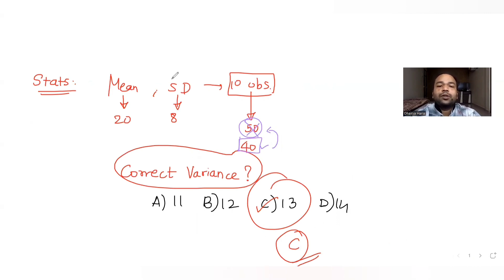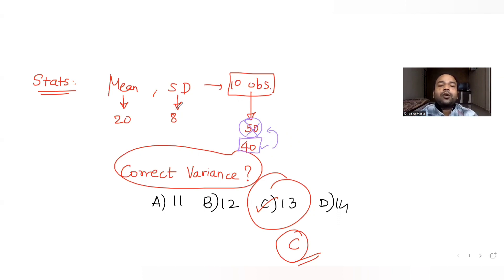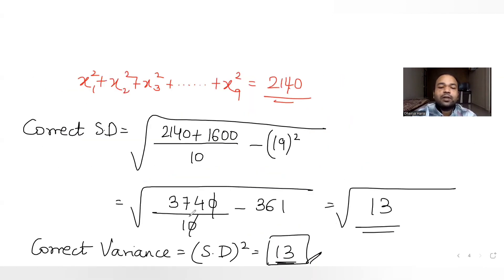I hope you have understood how to solve this type of question where we have been given an incorrect mean and standard deviation with one incorrect observation. We just needed to change 50 to 40, which gave us the correct standard deviation as √13, and squaring that gives the correct variance as 13 — matching option C.